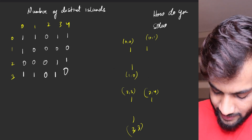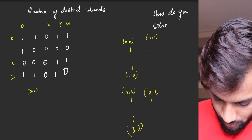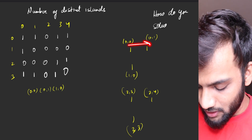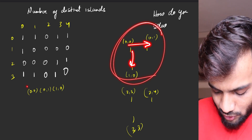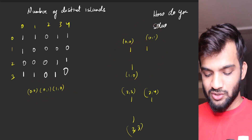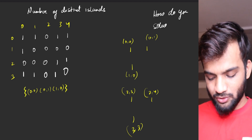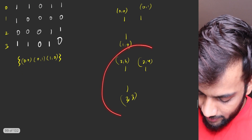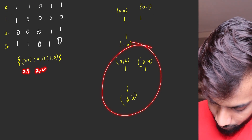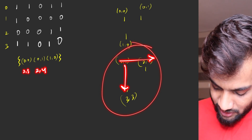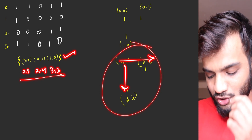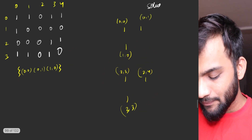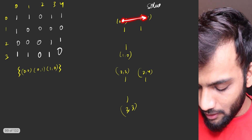Maybe I can store a list: 0,0 then 0,1 then 1,0. But if I store the second island as 2,3 then 2,4 then 3,3, they will not match. I have to make sure they match.